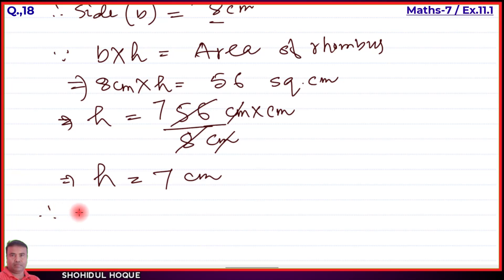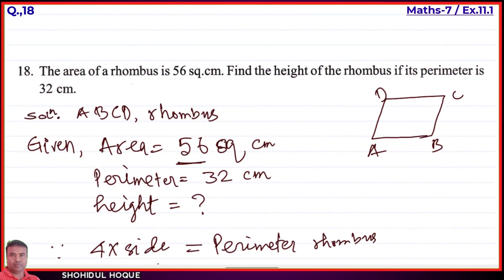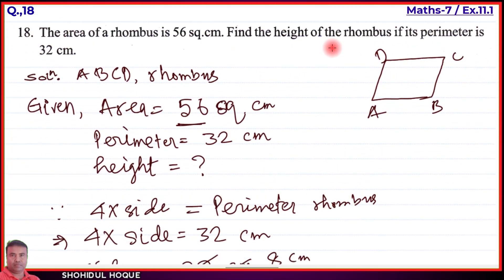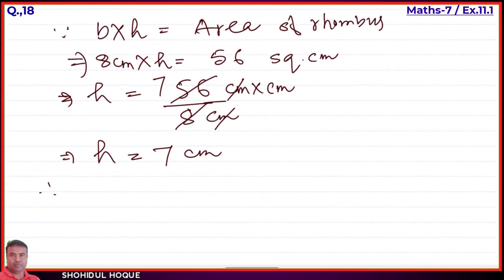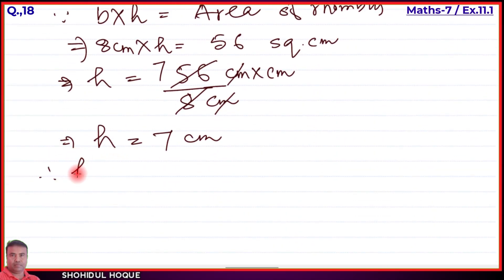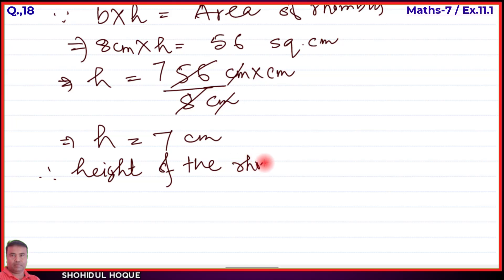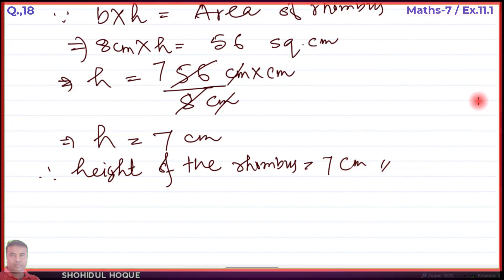Therefore we have found what was asked: the height of the rhombus equals 7 centimeters. Therefore, height of the rhombus = 7 centimeters. That is the answer. Both question number 17 and question number 18 are now solved.